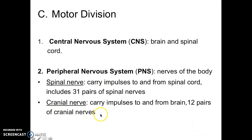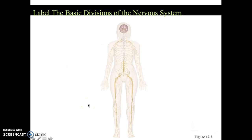It used to be part of our curriculum to memorize all of those, but now we just have to know a couple. So just know cranial nerves versus spinal nerves. Your brain and spinal cord are all part of your central nervous system. In your peripheral nervous system, you have the spinal nerves going to and from the spine, and your cranial nerves going to and from the cranium — the brain.